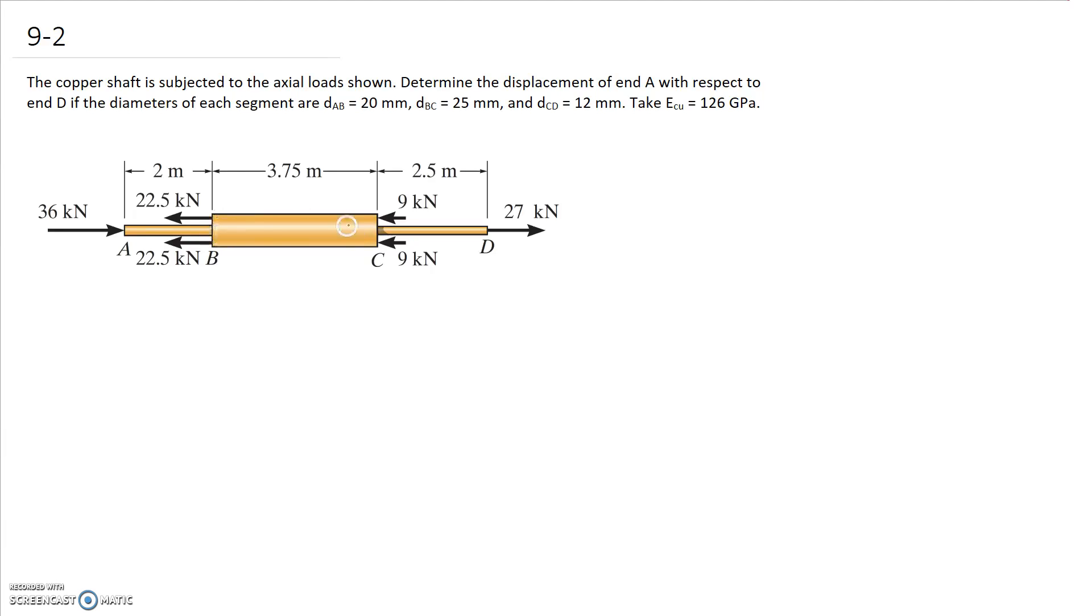We can see again through section BC we should have a constant load through there because there's no change in the force and again diameter and Young's modulus are constant so we don't need to do any further divisions. And finally we've got a third section CD that we're going to need to consider as well.